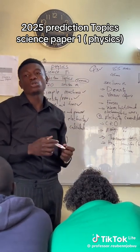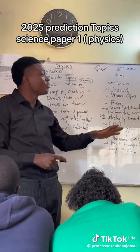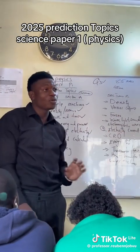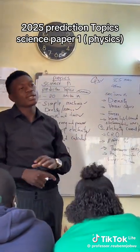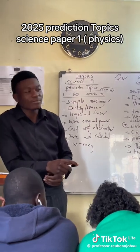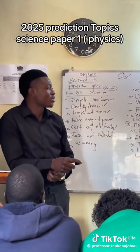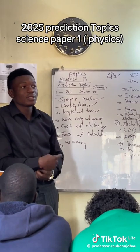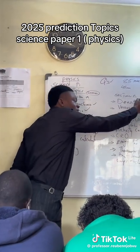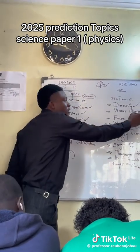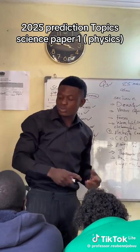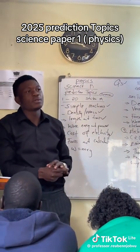When you finish, you are done with Physics — Science Paper 1 — and good to go to Chemistry. These are the prediction topics for 2025 that you need to know. Work through them and tick each topic off as you finish it. Let's now go to the last one — Chemistry — and then we're done.